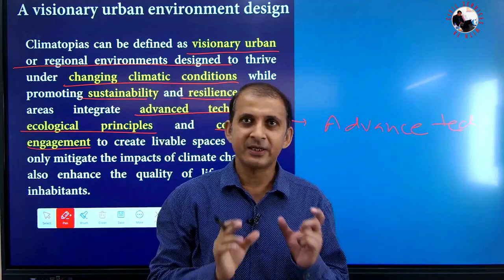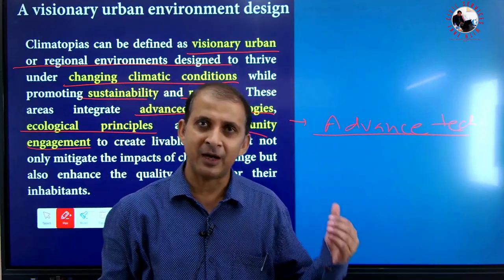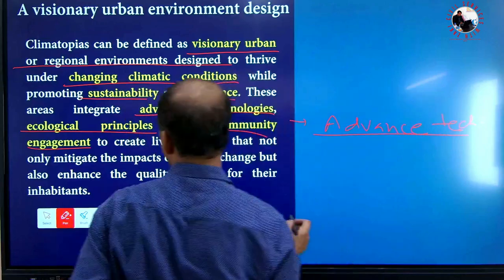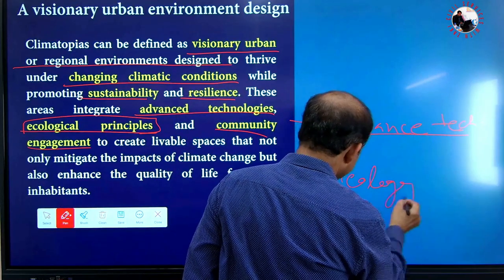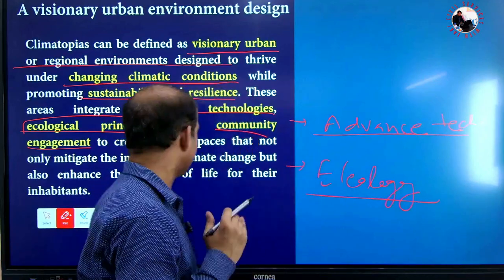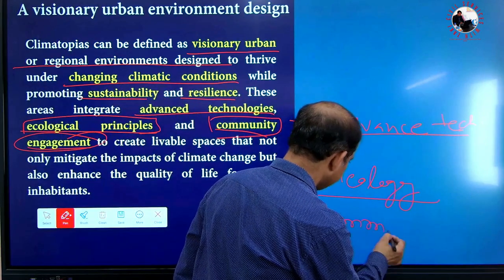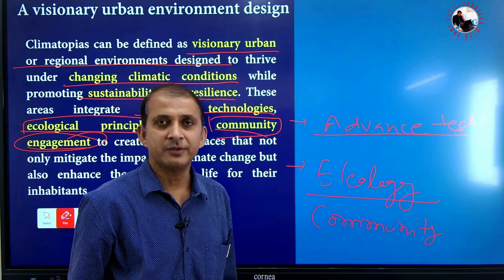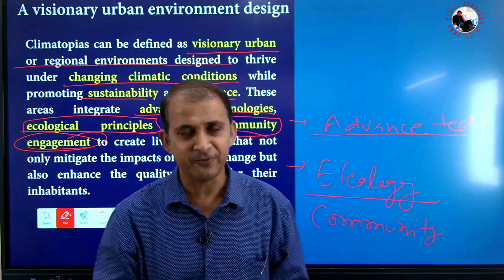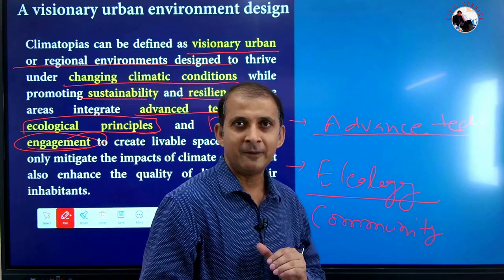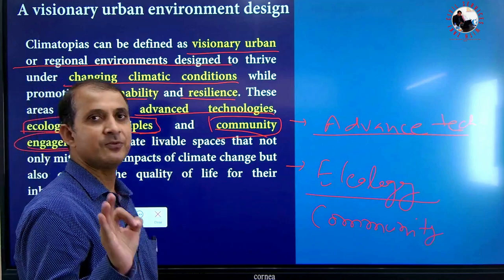Advanced technology includes satellite imaging, satellite detection of greenhouse gases, and continuous technology. It also uses biological and genetic engineering for ecological purposes. Ecological principles mean we take care about ecology regarding this advancement. Community engagement is also very significant — tribal communities know better than scientists about fighting environmental and climate change challenges. It is very significant to fill the gap between the community and this imagined society like the climatopia.